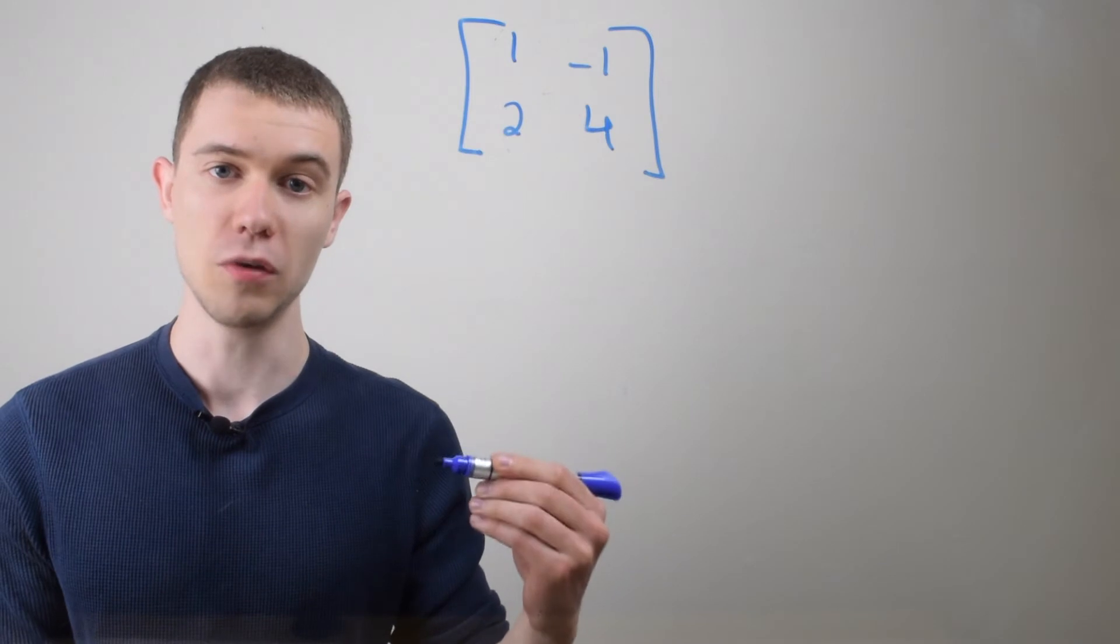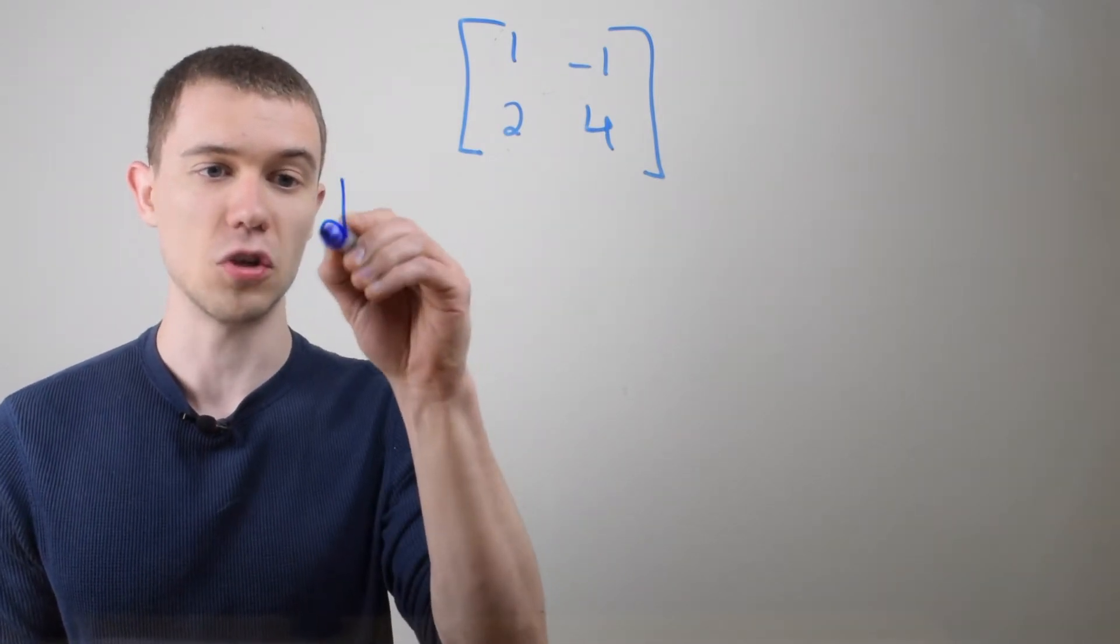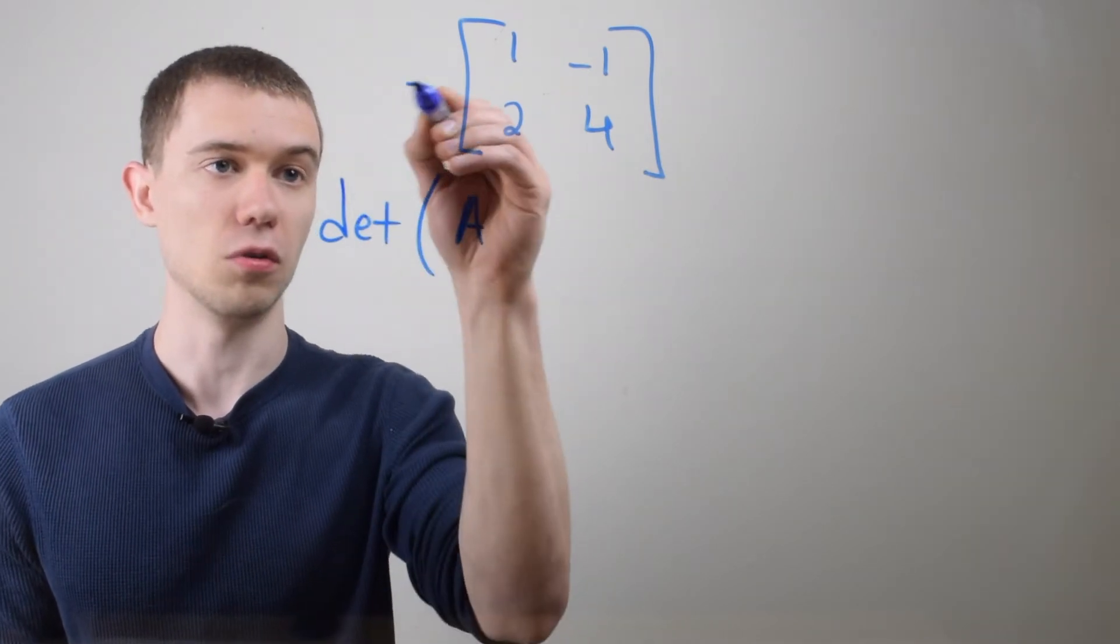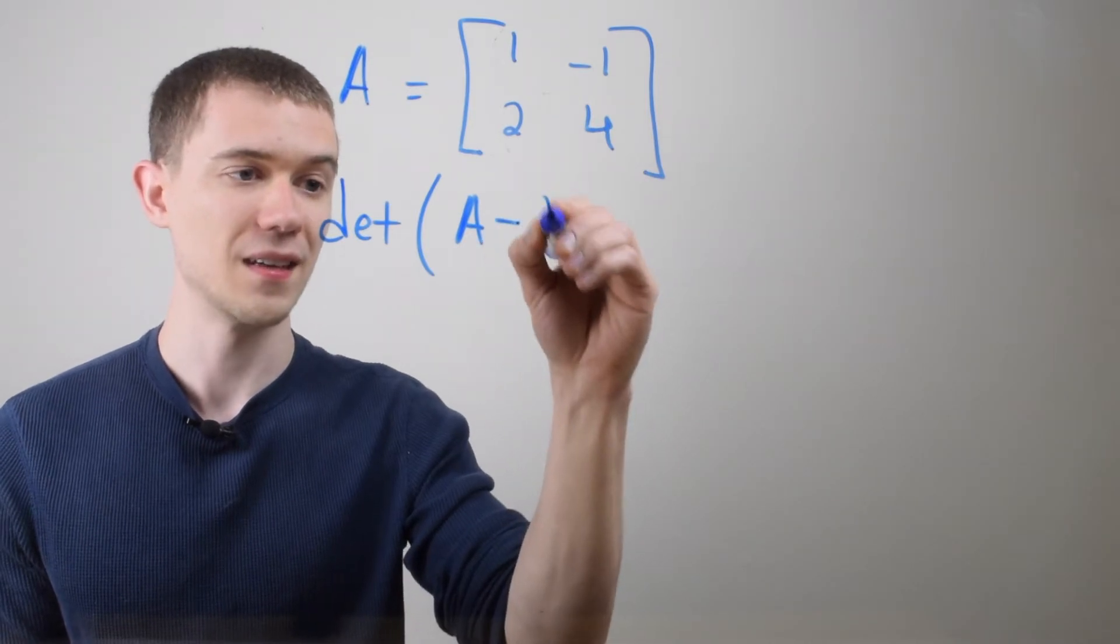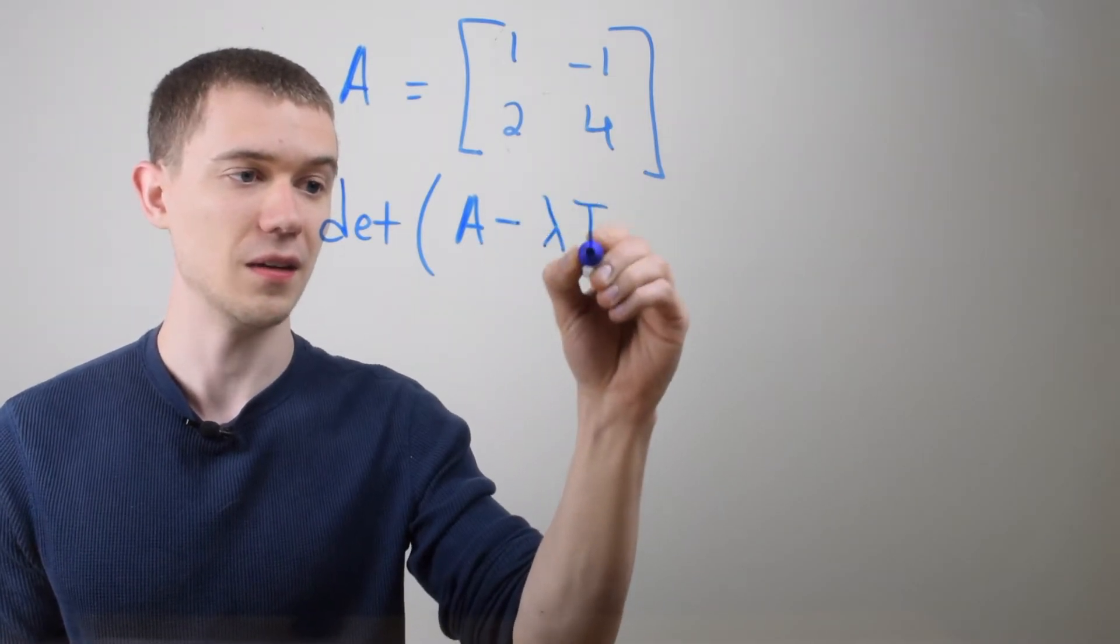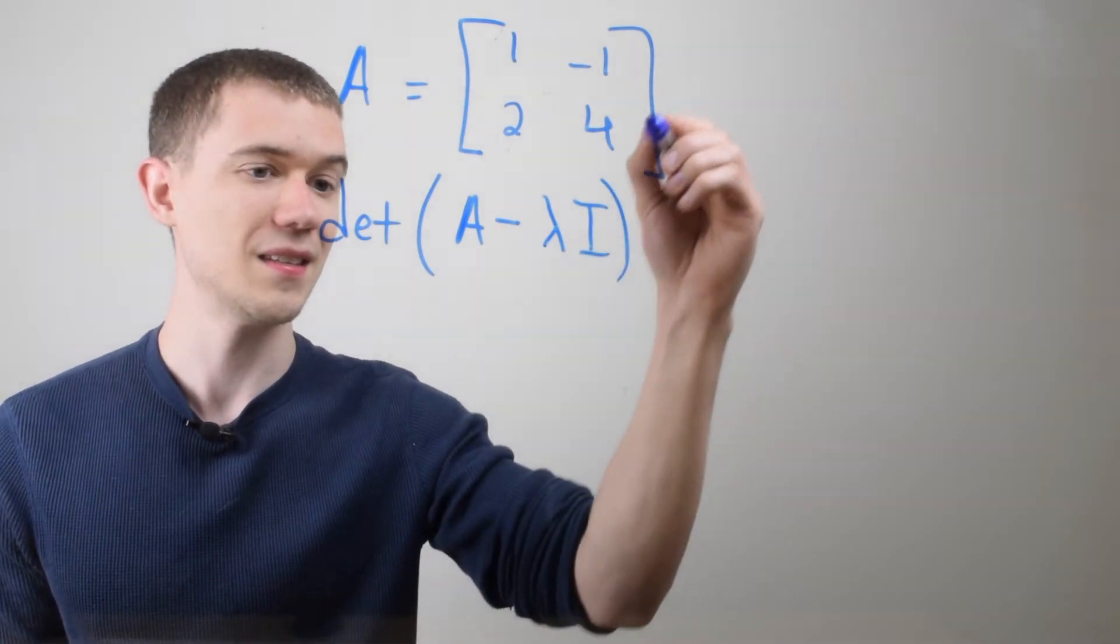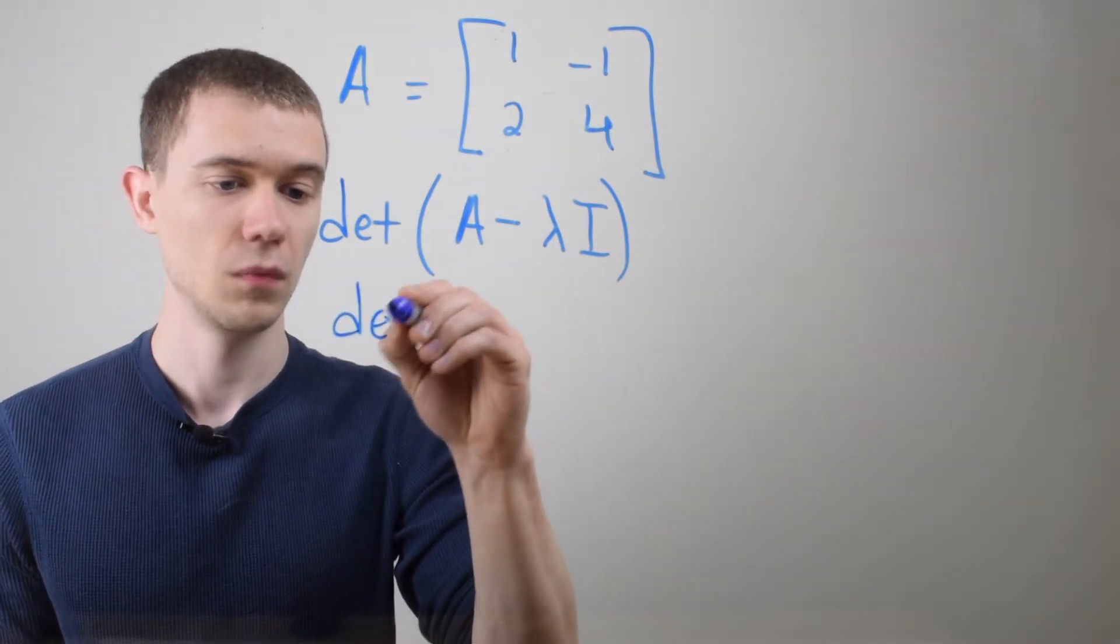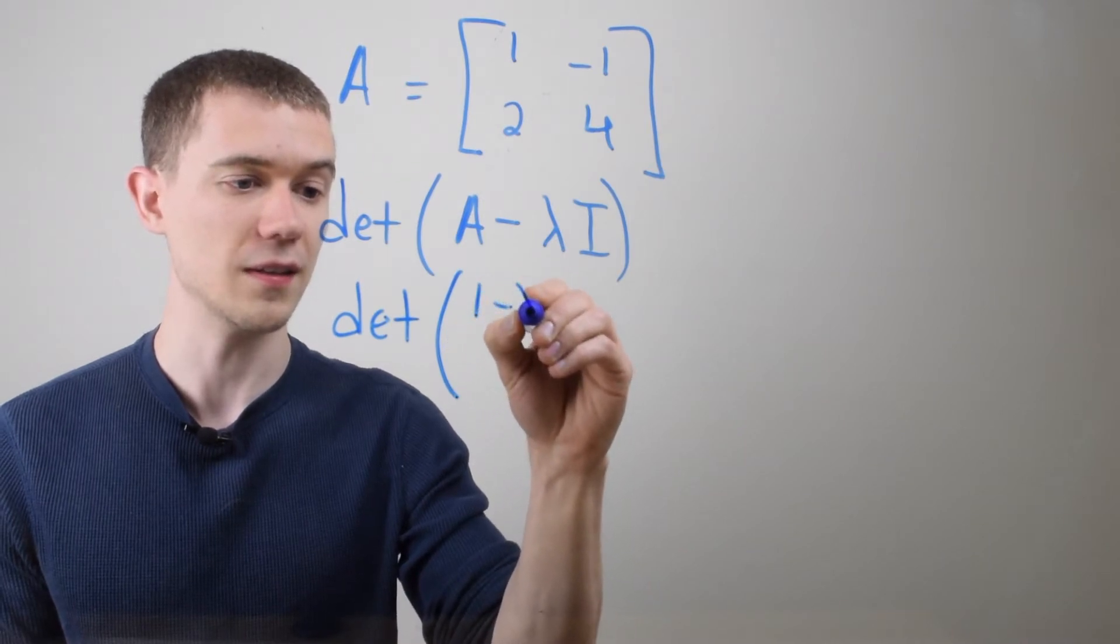Now in general the way you find the eigenvalues is you take the determinant of your matrix, if you call your matrix A, minus lambda times the identity matrix. So what I'm gonna do is I'm in a sense going to subtract lambda off of this main diagonal. It looks like this.